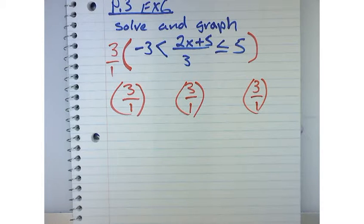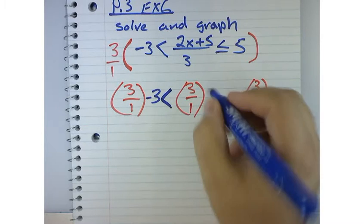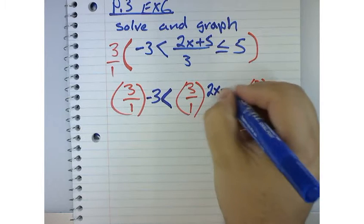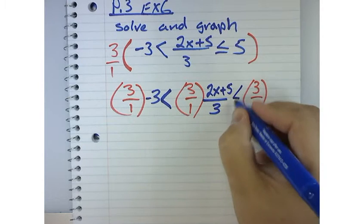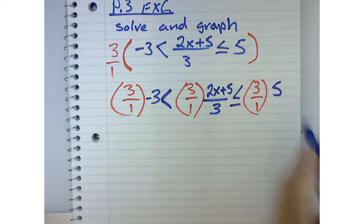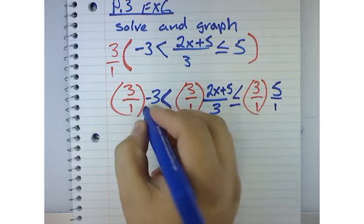So I'm going to say 3 over 1 and then 3 over 1 and then 3 over 1 here. And then what we'll do is we're going to say negative 3 is less than 2x plus 5 all over 3, and then that is less than or equal to 5. And really, what's another way to write 5? 5 over 1. But it doesn't matter. We can do the same thing with the negative 3 here.